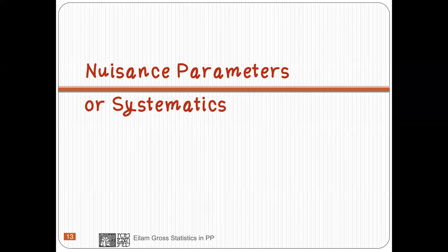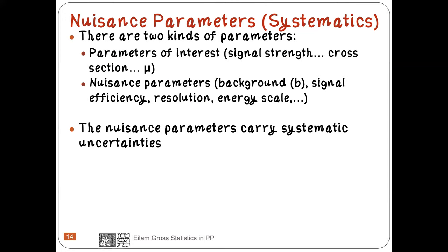A nuisance parameter is something that affects our measurement but we don't really care what it is — all we care is to measure it well, with as small an error as possible, so its effect on our measurement is minimized. Nuisance parameters can be the background, the signal efficiency, the resolution, the energy scale, or the mass resolution. They carry systematic uncertainties which affect your measurement a lot. If you have control of your nuisance parameters, you win against your competitor experiment — that is where the magic is.